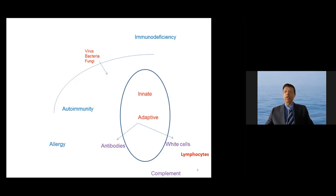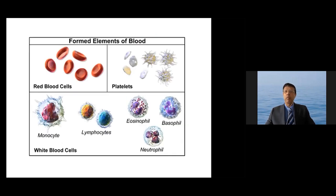So these aspects are very important with regards to keeping the body safe. There are different formed elements in blood. There are the red blood cells, the platelets, and white cells.